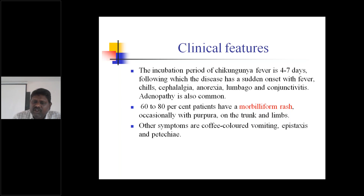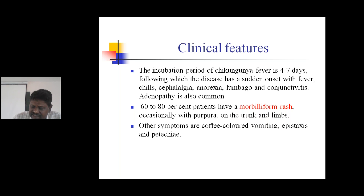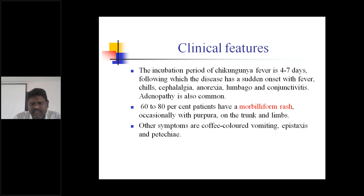Coffee-colored vomiting gives a lot of differential diagnoses — you can go for gastrointestinal tract diseases. But in case of Chikungunya also you can find coffee-colored vomiting, epistaxis — bleeding from the nose — and petechiae present throughout the body. The rash which is present will be morbilliform rash, and other symptoms are coffee-colored vomiting, epistaxis, and petechiae.